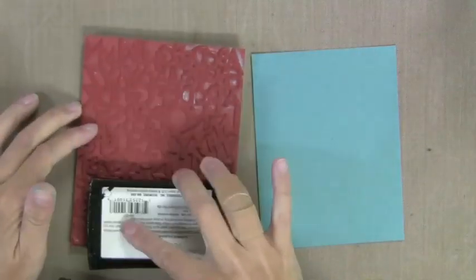So I'm starting with one of the Studio Calico Hero Arts background stamps. This is a cling stamp. I'm just going to leave it laying on the table. It's easier to stamp backgrounds that way for me.